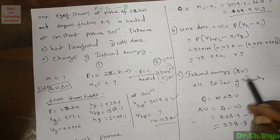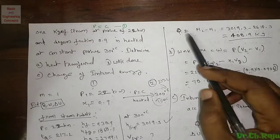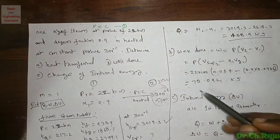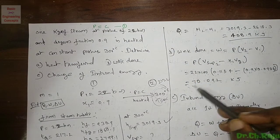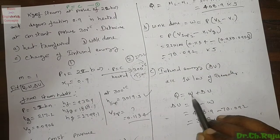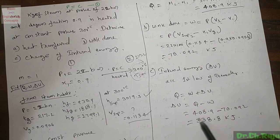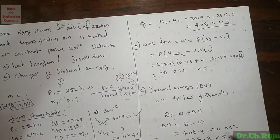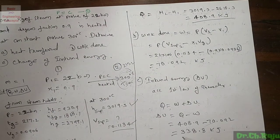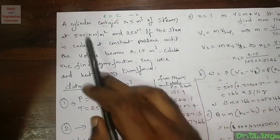Change in internal energy ΔU is obtained from the first law: ΔU = Q - W = 408.9 - 70.092 = 338.8 kJ.